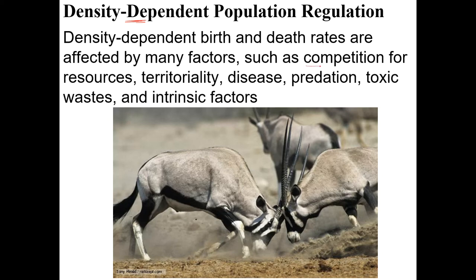For example, competition: if you have a very dense group of trees, they're all competing for sunlight or the nitrogen in the soil. If you only have one tree in the area, it gets all the sunlight it wants. So the more there are, the more competition there is. Territoriality is very similar — if you don't have many individuals to fight with, you have the territory you want and birth rates are high. If you're fighting for resources, you put a lot of energy into that and you won't have as many babies.